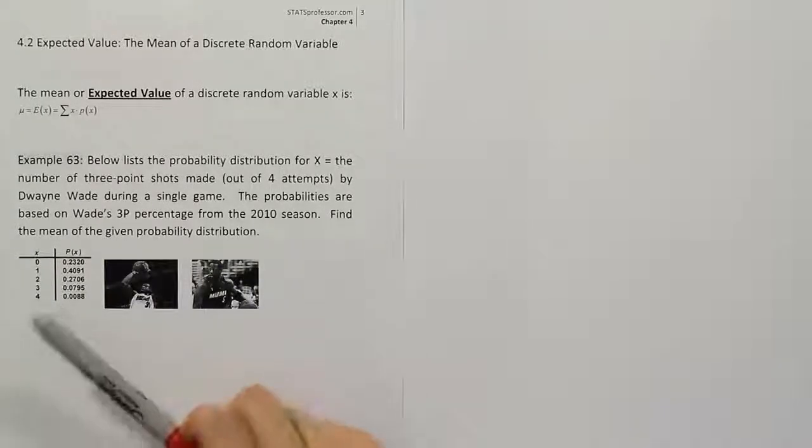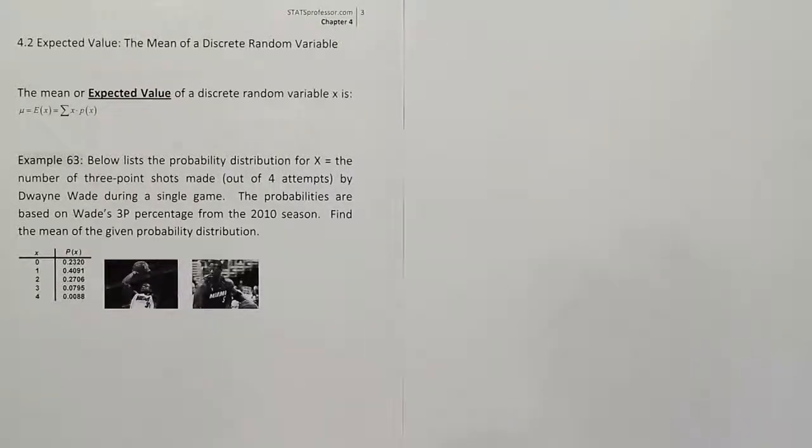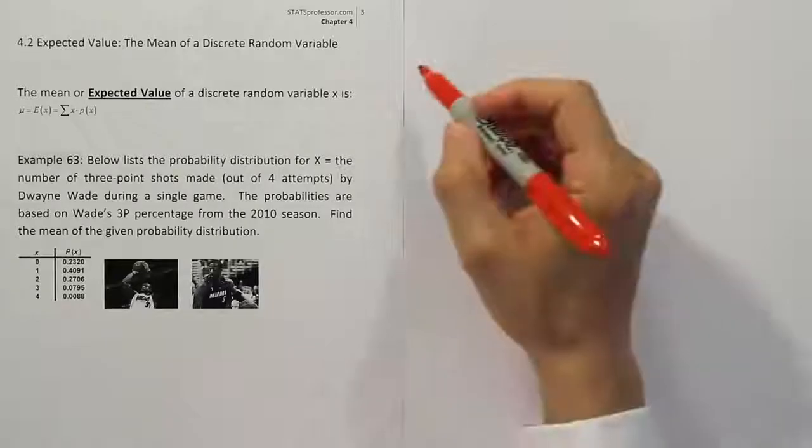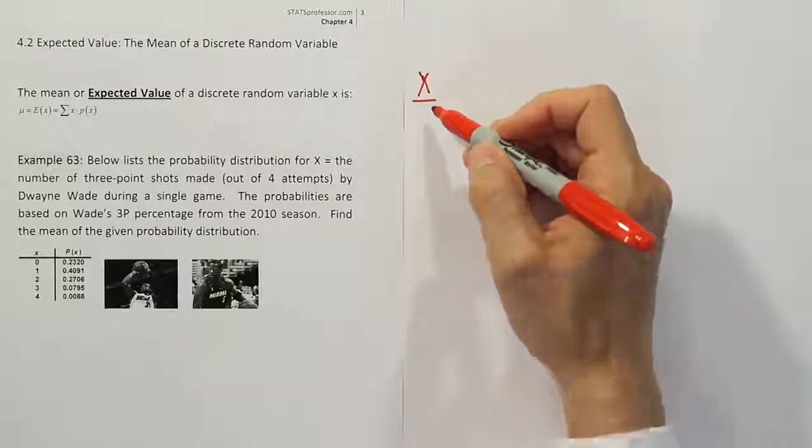Okay, so they give us a probability distribution, and they're asking us to find its average. So I'm just going to copy down the table so we can work with it here. The table actually has X, which is the number of shots he makes out of four, right?